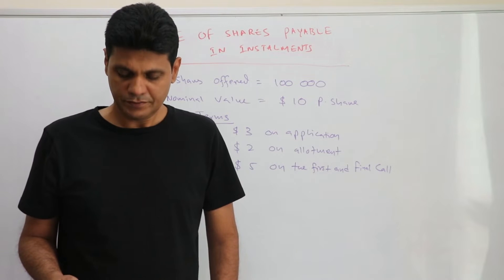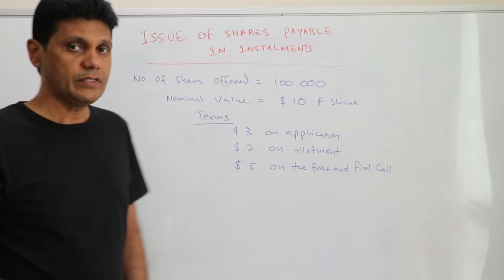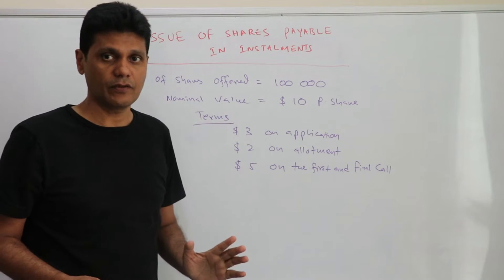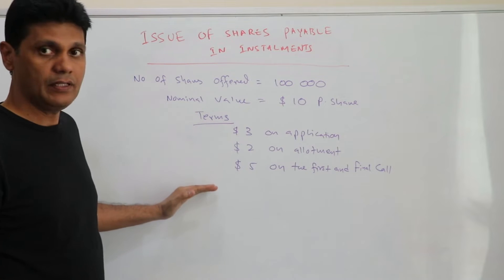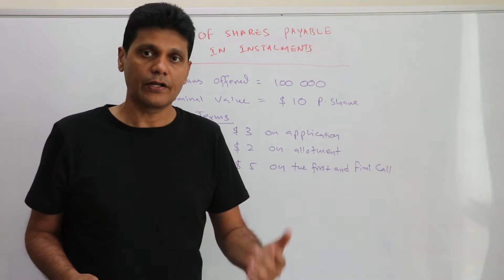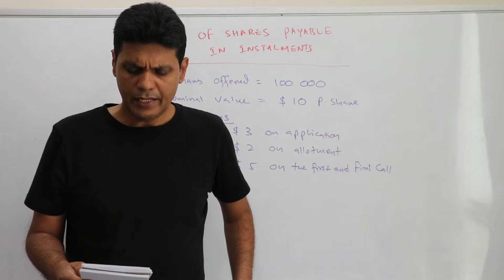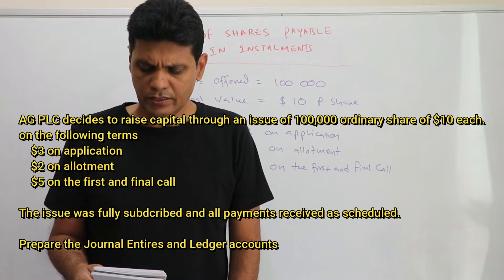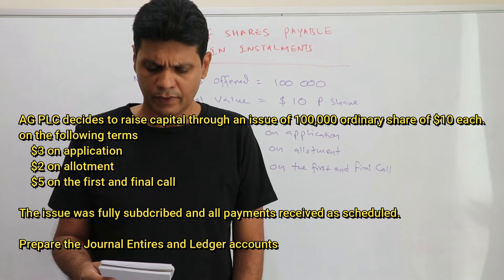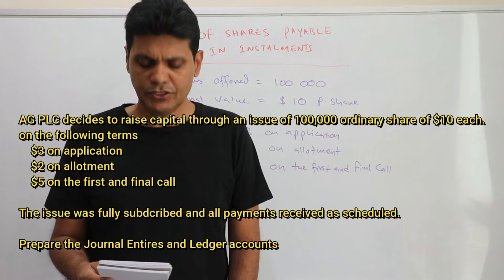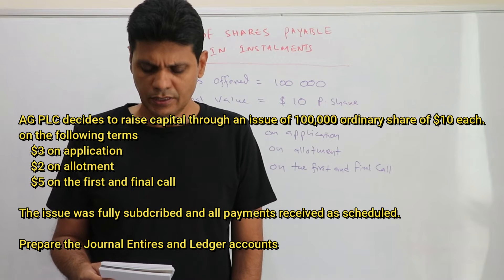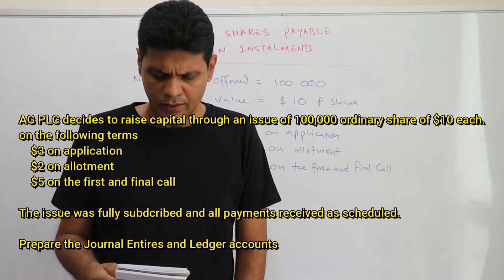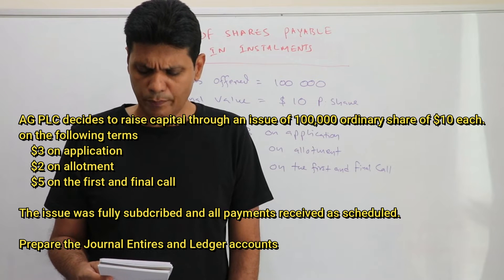Welcome to the session. Now let's move on to the next topic, which is issue of shares payable in installments. AG PLC offered 100,000 ordinary shares at $10 per share on the following terms: $3 on application, $2 on allotment, and $5 on the first and final call. The issue was fully subscribed and all payments received as scheduled.